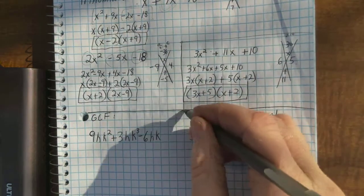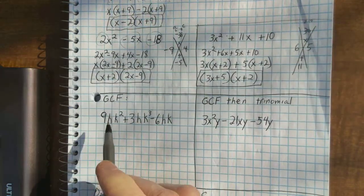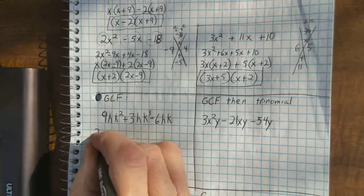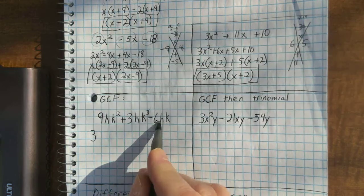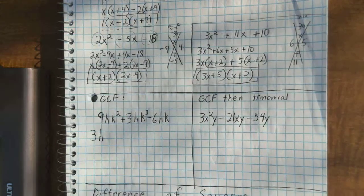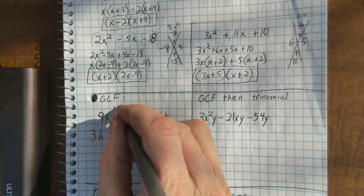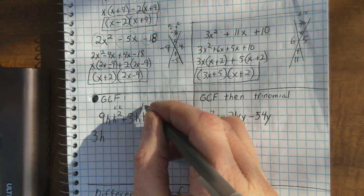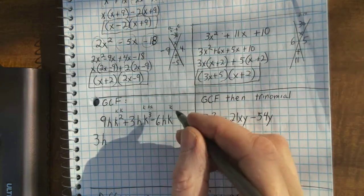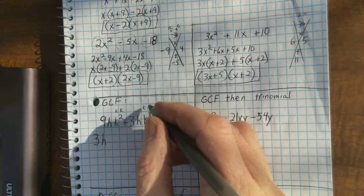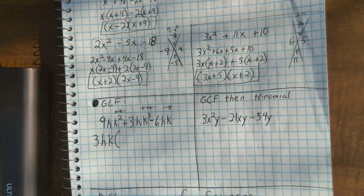Now, we also need to kind of remember how to do greatest common factor. 9, 3, and 6. Would you agree with me that 3 goes into these? H, H, H is on all three of them. This has K times K. This has K times K times K times K. And this has K. So, they each have at least one K in them. So, I'm going to pull a K out as the GCF. That's the greatest common factor of these three terms.